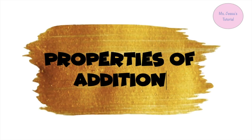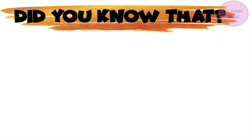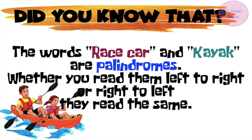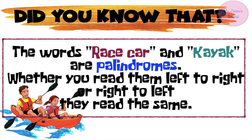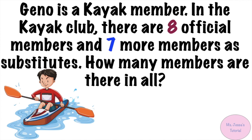Today we're going to study Properties of Addition. Did you know that the words 'race car' and 'kayak' are palindromes? Whether you read them left to right or right to left, they read the same. Gino is a kayak member. In the kayak club, there are 8 official members and 7 more members as substitutes. How many members are there in all?